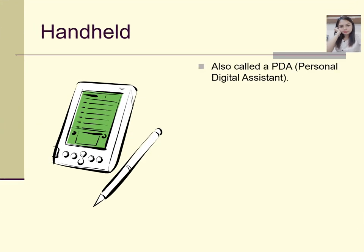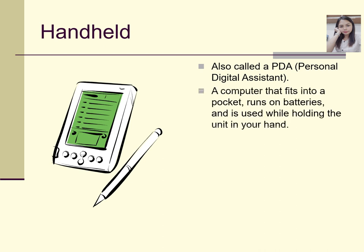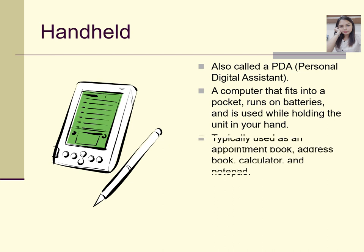Also called a PDA, or personal digital assistant, it looks like a tablet and also has a pen or stylus. A PDA is a computer that fits in a pocket and runs on batteries. It is used while holding the unit in your hand. Today, they are tablets, and they are already rechargeable — you don't need to buy a battery.